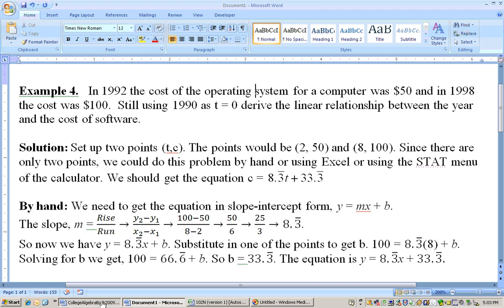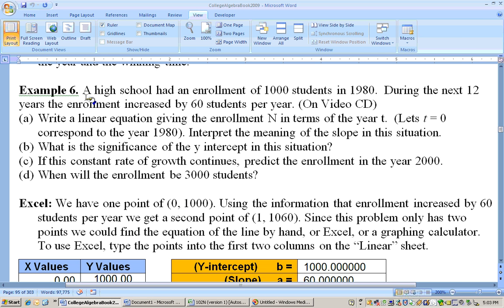And I think that's just about everything on that problem. And let's go ahead and do one other one, and that's this one. This one says that a high school had an enrollment of 1,000 students in 1980. During the next 12 years, the enrollment increased by 60 students per year. Now, we need to write a linear equation, giving the enrollment n, this is like your y value, in terms of the year, x, t, whatever, that's your x variable right there is time. And t equals 0 is 1980.